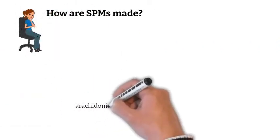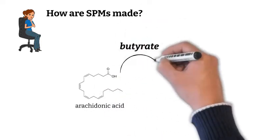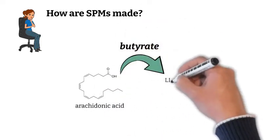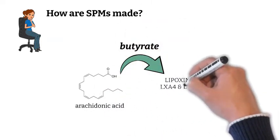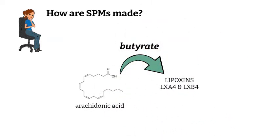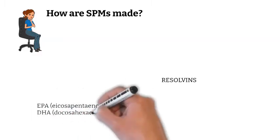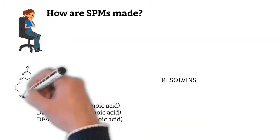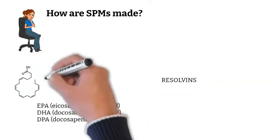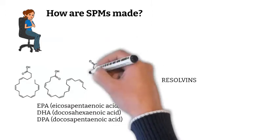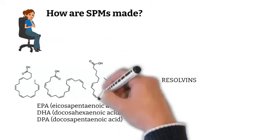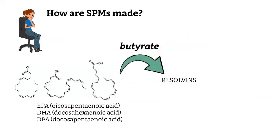Lipoxins are derived from arachidonic acid, the two major ones being LXA4 and LXB4. Whereas resolvins are derived from EPA (eicosapentaenoic acid), DHA (docosahexaenoic acid), and DPA (docosapentaenoic acid).